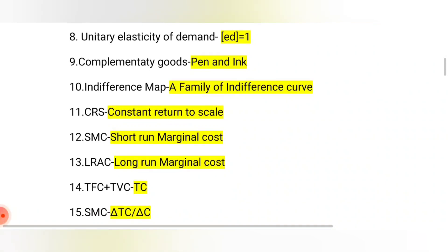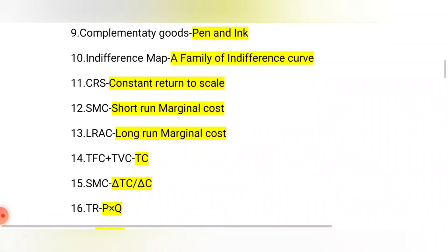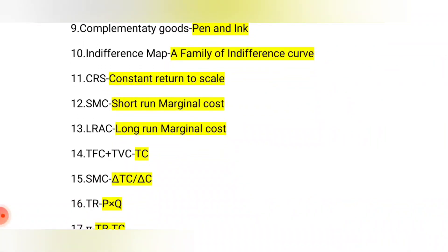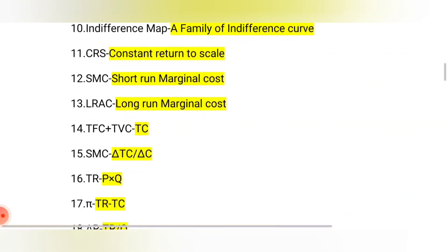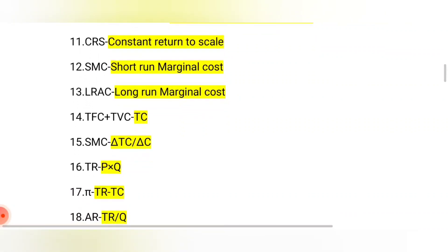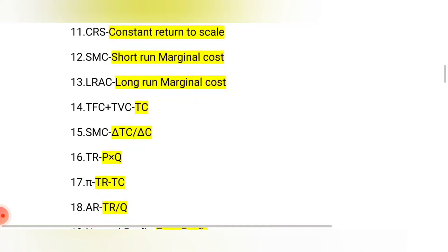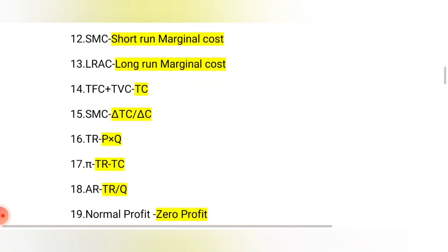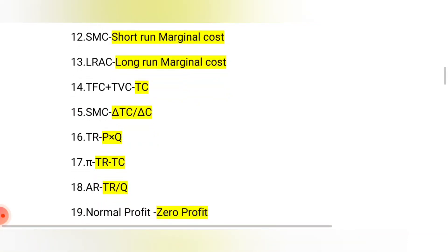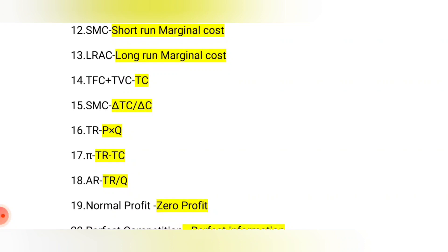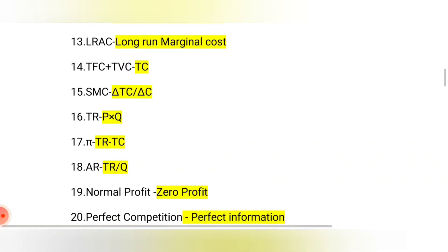Indifference map is a family of indifference curves. CRS is constant return to scale. SMC is short-run marginal cost. LRAC is long-run average cost. TFC plus TVC equals TC — that is, total cost. When you add fixed cost and variable cost you get total cost in the short run.